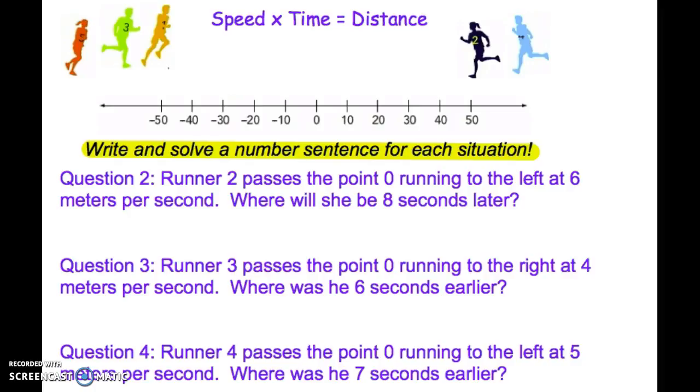For question two, runner two, here she is. She passes zero, she runs to the left six meters per second. And after eight seconds, she's almost to negative 50 there. I want you to notice her speed. She's running to the left, so we're going to call that negative six. Where is she going to be eight seconds later? Well, that's a positive time in the future, so times eight. And she was at negative 48. So you should have written negative six times eight equals negative 48.